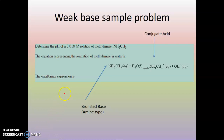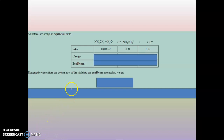Let's do a sample problem: determine the pH of a 0.018 molar solution of methylamine. Methylamine is a simple organic base with an NH2 group bonded to a CH3. There's a lone pair of electrons on the nitrogen that can accept a hydrogen ion, giving you methyl ammonium plus OH−. We set up an ICE table: the initial concentration of methylamine is 0.018 molar, with no conjugate acid and no hydroxide before it's added to water.